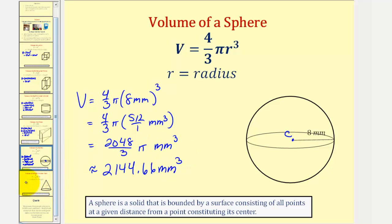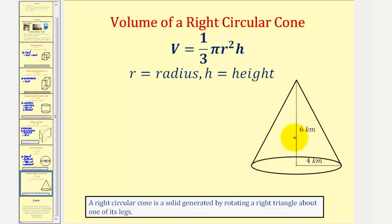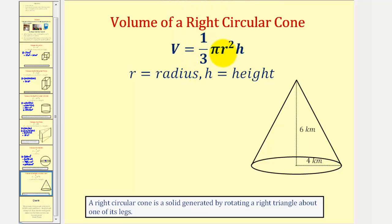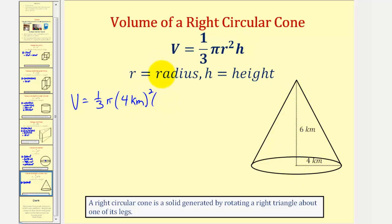For our last example, we'll find the volume of a right circular cone pictured here. A right circular cone is a solid generated by rotating a right triangle about one of its legs. If we focus on this right triangle and rotate it about this leg, it forms this right circular cone. The volume is equal to one-third pi r squared h. So the volume equals one-third times pi times r squared, which is four kilometers squared, times the height, which is six kilometers.